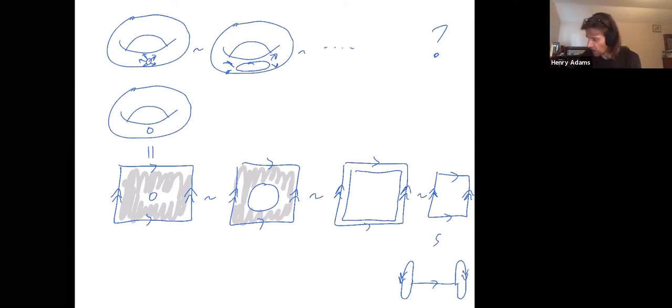So I can get rid of this single arrow here because I've already identified the top and the bottom, but I still need to identify the right and the left. And then when I do that, the right and the left become just one loop because the right and the left have been glued together.